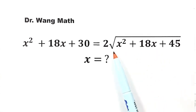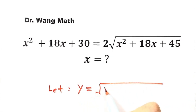So now let's see. First, we're going to let this part equal y. So y equals the square root of x squared plus 18x plus 45.